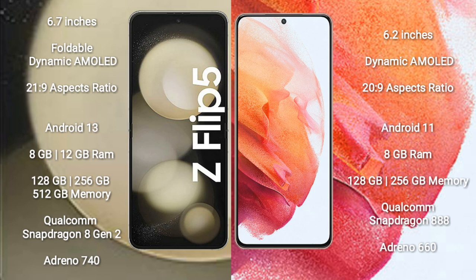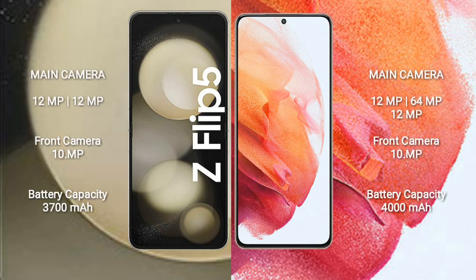The Samsung Galaxy Z Flip 5 comes with 8GB or 12GB RAM and 256GB internal storage, powered by a Qualcomm Snapdragon 8 Gen 2 processor with Adreno 740 GPU. The Samsung Galaxy S21 comes with 8GB RAM and 128GB or 256GB internal storage, powered by a Qualcomm Snapdragon 888 processor with Adreno 660 GPU.